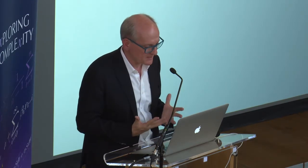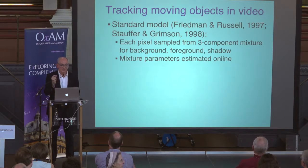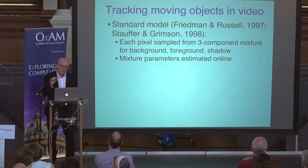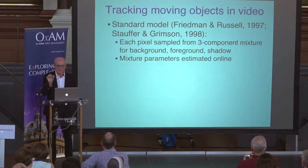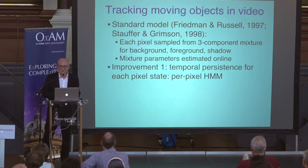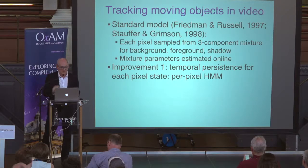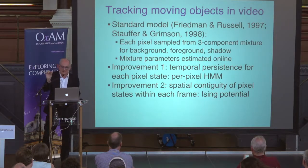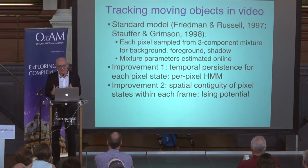We also thought it would be interesting to try computer vision. There's a probabilistic model called the adaptive background mixture model used for tracking moving objects in video. It generalizes the idea that if you average a camera's image of a room over 24 hours, moving objects wash out and you get an empty room background. Subtracting that background from the current image reveals moving objects — an idea known since the 19th century. We wrote this model in 1997 and it became part of the standard armory of computer vision. But we wanted to do something much more sophisticated: temporal persistence where if a pixel was in shadow it's likely to be in shadow in the next frame, and spatial contiguity where neighboring pixels are likely to share the same state.